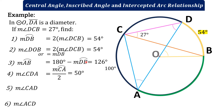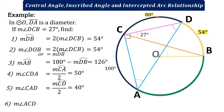Number 5: find the measure of angle CAD. Angle CAD's intercepted arc is arc CD. Arc ACD is a semicircle, and arc CA is 100 degrees, so by subtracting from 180, arc CD equals 80 degrees. We can now compute angle CAD — it is one-half its intercepted arc, so 80 divided by 2 equals 40 degrees.